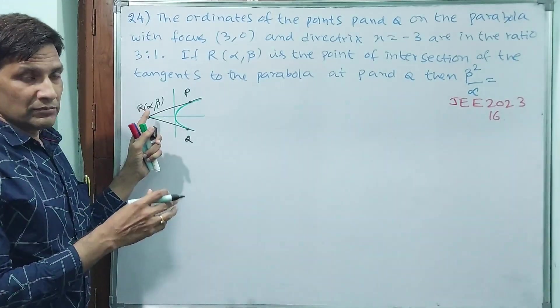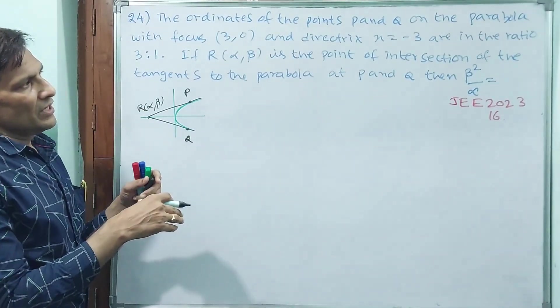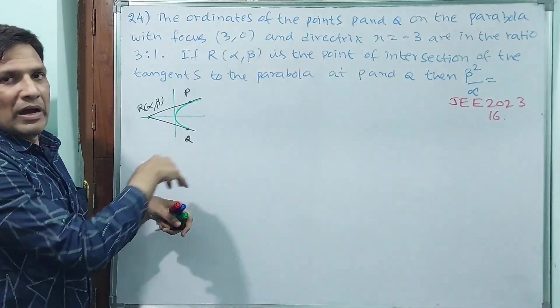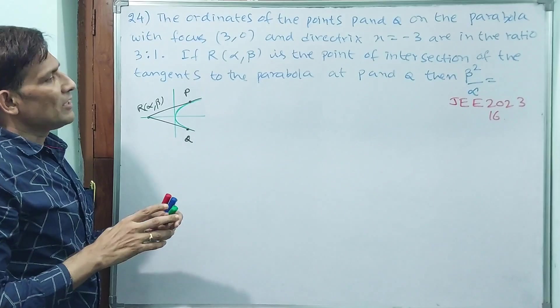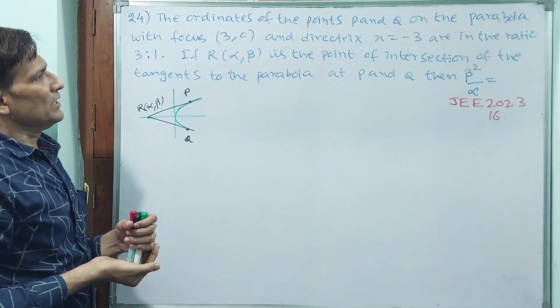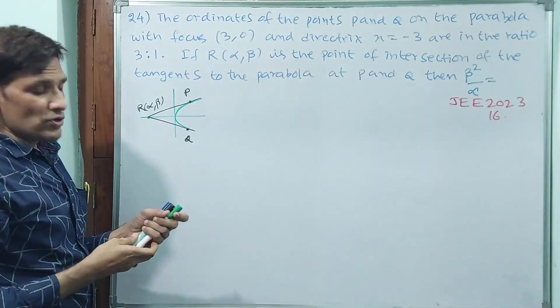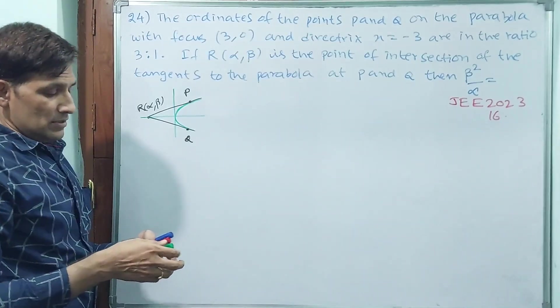Alpha, beta exact values may not come, ratio type will come. And the ratio again, beta squared by alpha, if you make, automatically ratio divided by ratio, you are going to get one numerical value. The value should come 16, as per this question.